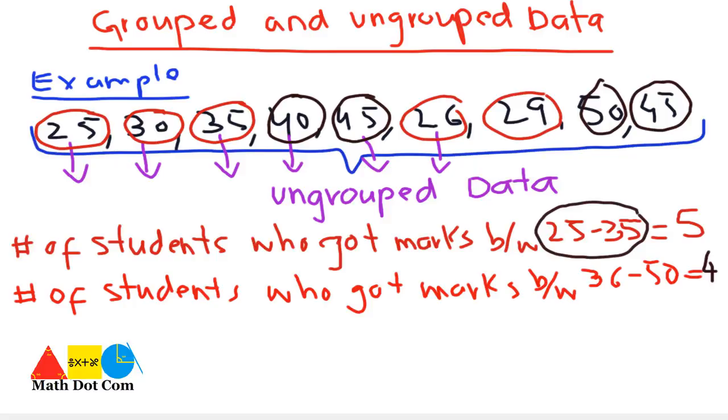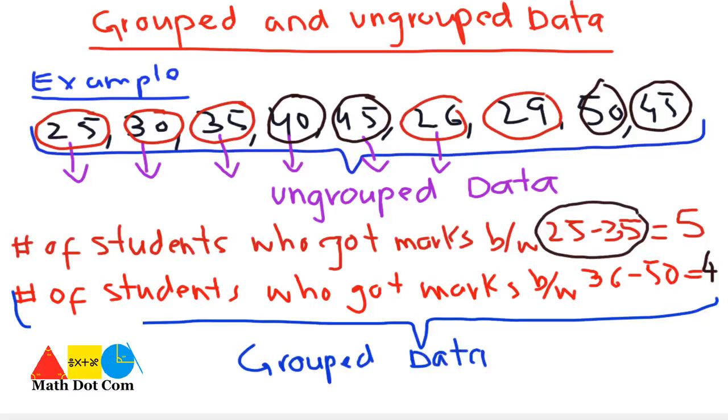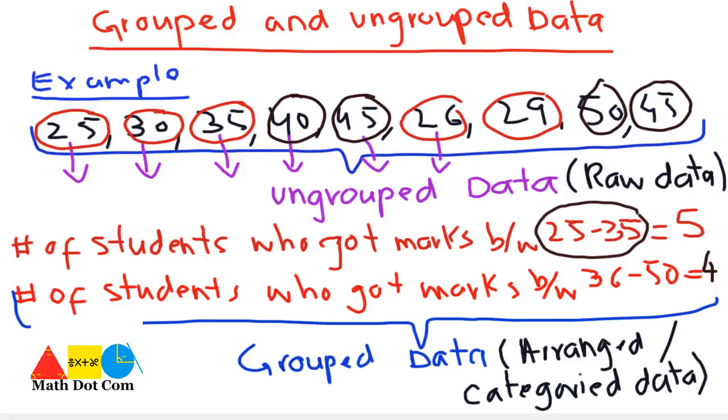You will call this grouped data, as the data is grouped in the form of groups and you have organized it properly for efficient use. Here you can find how many students fall in one category and how many in another. Ungrouped data is raw data and grouped data is arranged or categorized data. This is how you differentiate between grouped and ungrouped data.